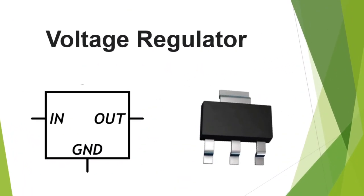Then we have the voltage regulators. We find this kind of voltage regulators in laptop motherboards or smartphone motherboards. You can also find THT voltage regulators with terminals — basically we have three pins: one pin for input, another pin for output, and the third pin is for ground. For example, the input is 12 volts and the output is 5 volts — so this IC regulates the voltage.